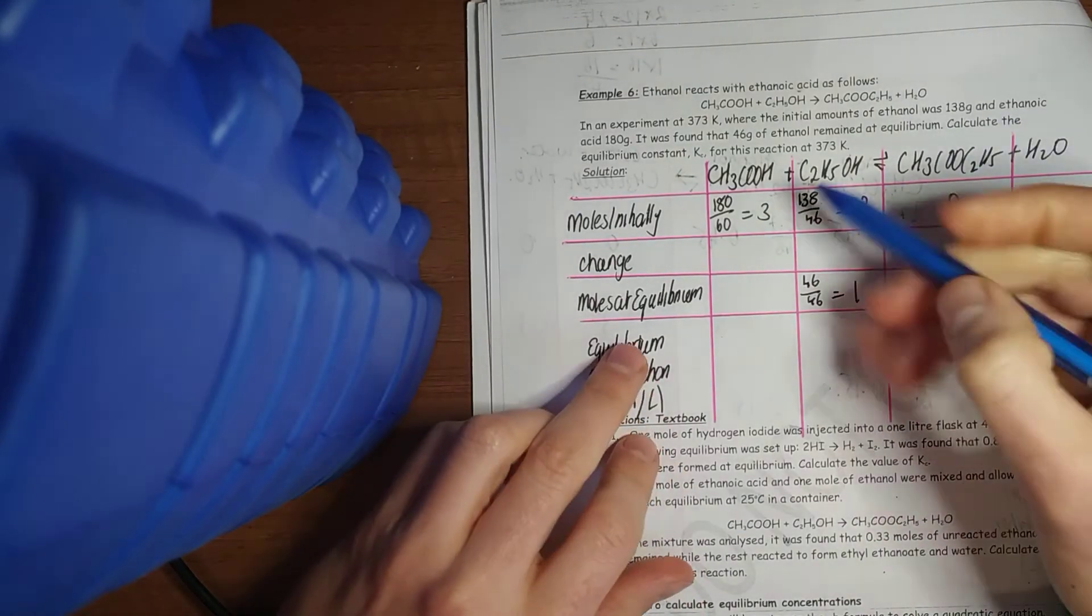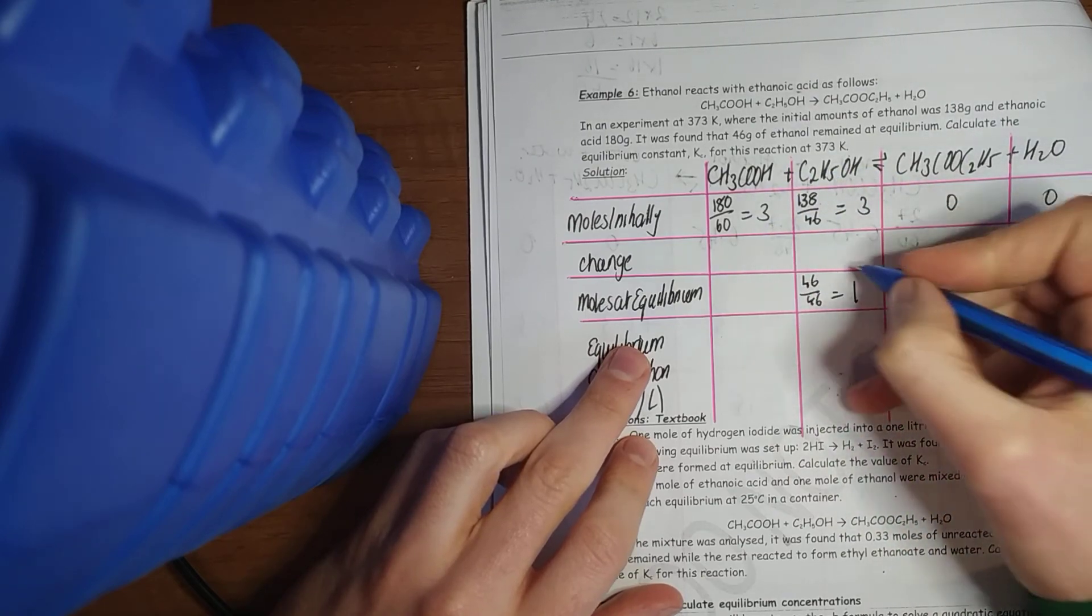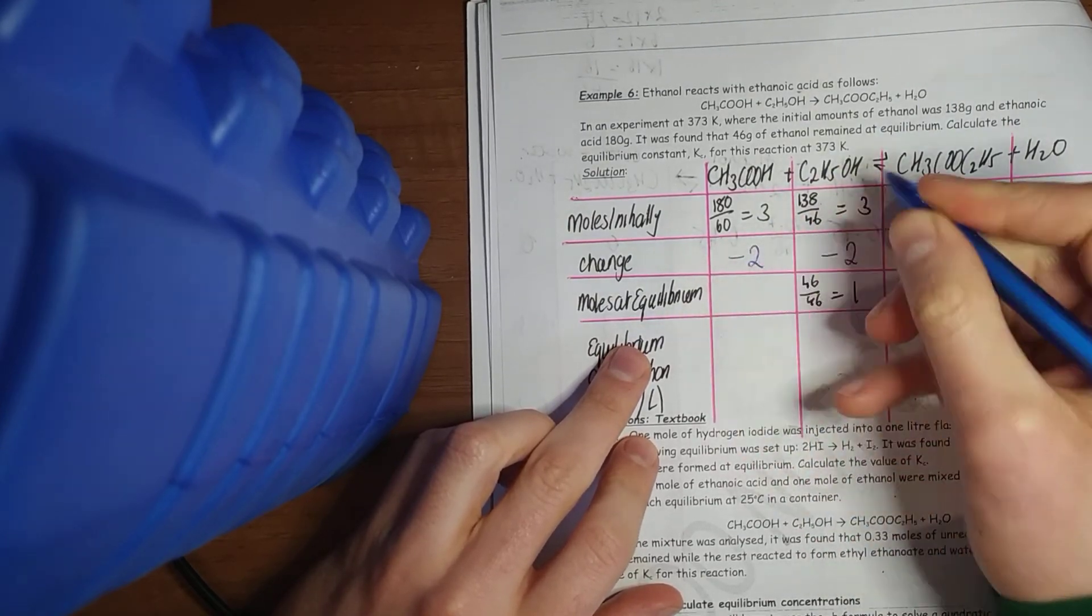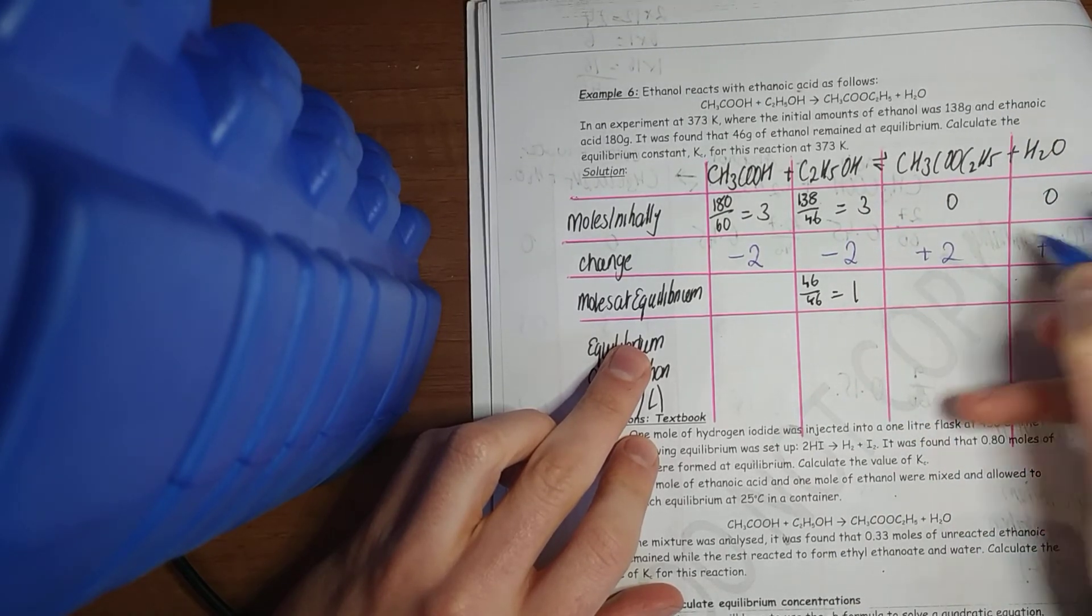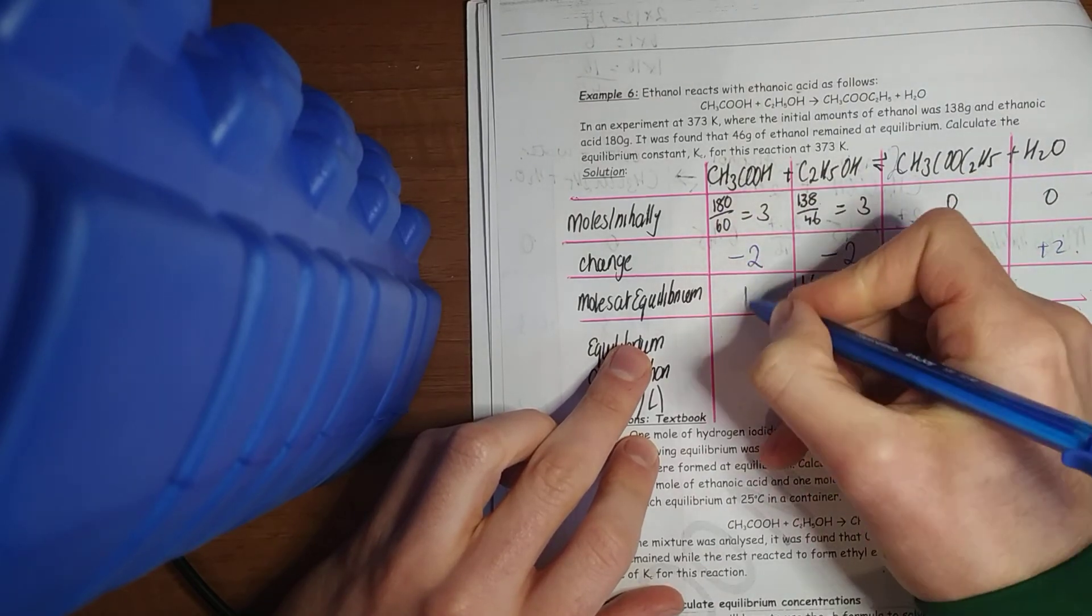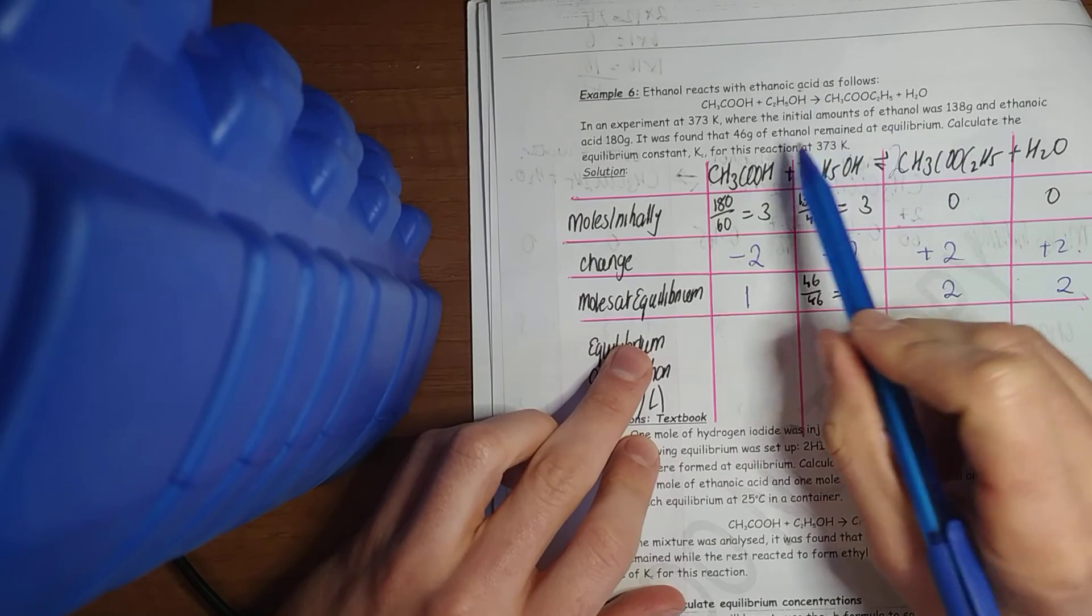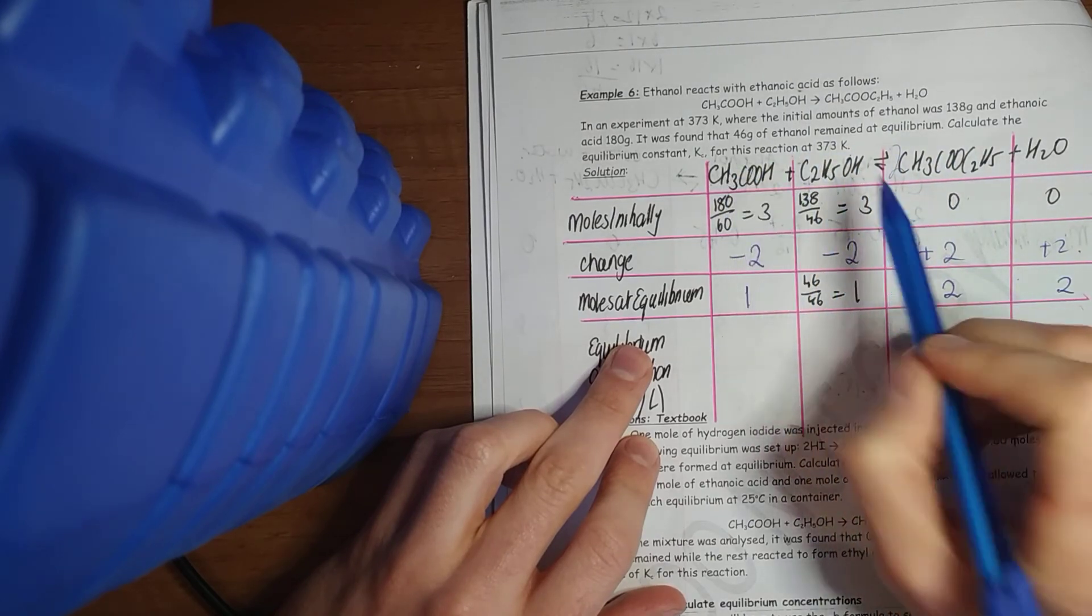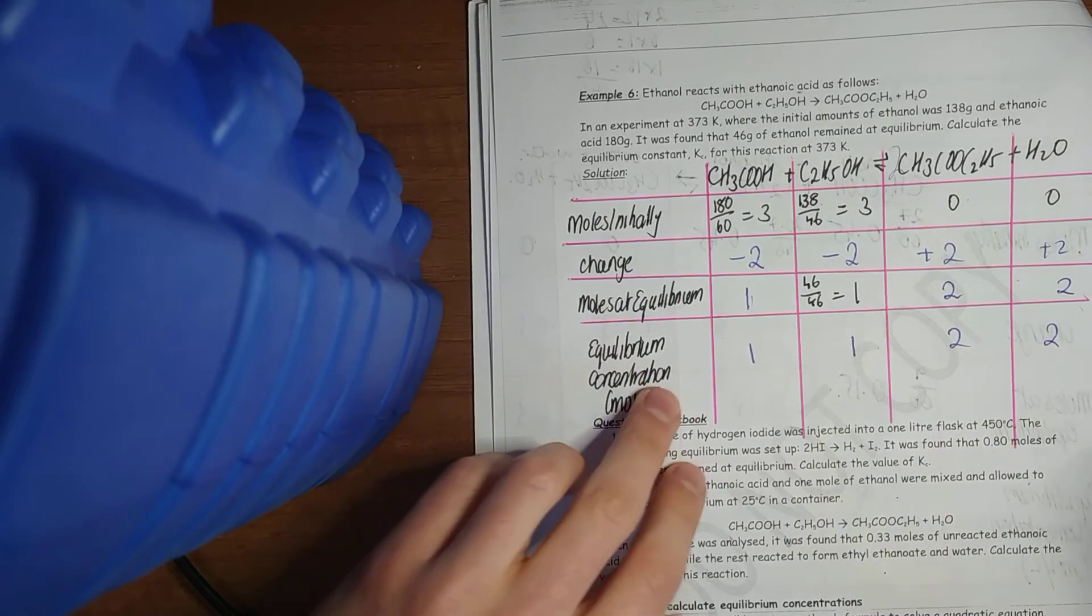Now we start filling it in. What's happened to my concentration of my reactants? It went down 2. Here's my ratio 1 to 1. So these went up 2. Remember, just in case there was a 2 there, it would go up 4. So how much have we got here? We've got 1. 0 plus 2 is 2. 0 plus 2 is 2. Have they given me the size of the container? No. So just fill these down. 1, 1, 2, 2. That's actually going to give me the same result.